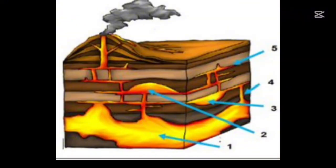Now let's try to label this diagram of intrusive landforms. Number one is the largest intrusion, so it's obviously our Batholith — it has an irregular shape. Number two resembles a mushroom, so that's our Laccolith; you can see the overlying strata is curved upwards. Number three is our saucer-shaped intrusion, which is the Lopolith. Number four is a vertical shape — that's our dyke. Number five is our horizontal intrusion, which is our sill.